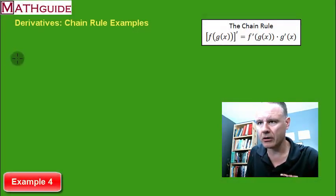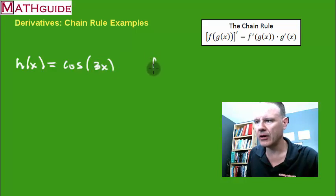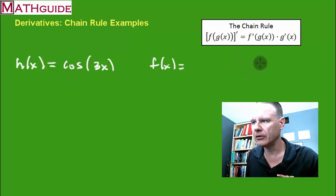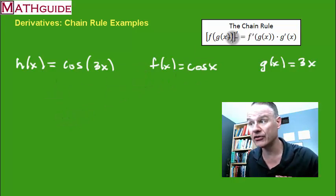Here's example 4. H of x is equal to the cosine of 3x. What I'm going to do is separate this function by describing its parts. The main function going on here is the cosine function. What are we taking the cosine of? It's 3x. Now we have our composition of functions. Now we can use the chain rule.